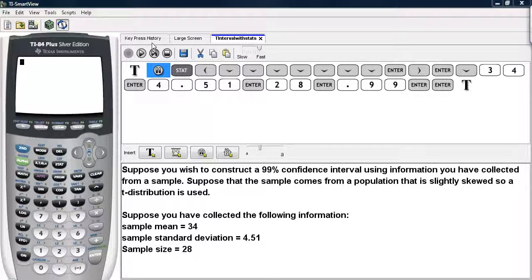Suppose you wish to construct a 99% confidence interval using information you have collected from a sample. Suppose that this sample comes from a population that is slightly skewed, so a t-distribution is used. And we've collected the following information.